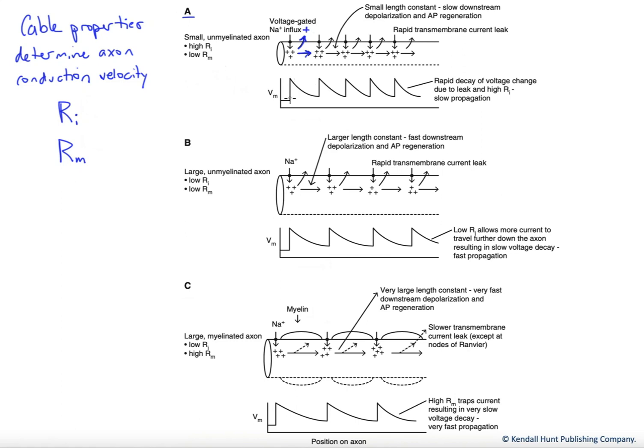And so overall, we boost our voltage change with our voltage-gated channels, our sodium channels opening here. But then we get very rapid decay. Our slope here is very steep. We get rapid decay, and our membrane potential dissipates quickly with distance.